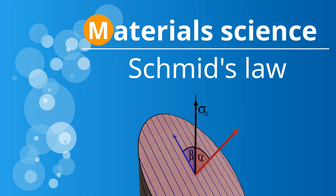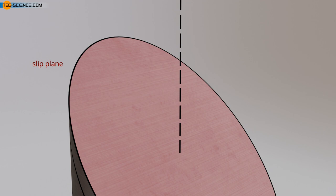Schmid's Law. If a material is subjected to tensile stress, it will eventually deform if the tensile forces are too great. As already explained in detail in the linked video on deformation, this requires lattice planes to slip. For this purpose, forces must act in a suitable manner in a slip plane so that it can be sheared.